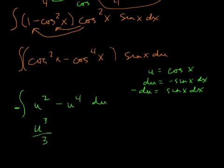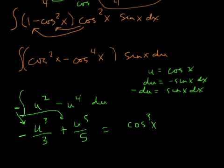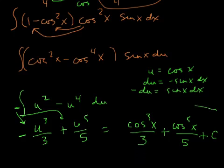You get u cubed over three, u to the fifth over five, and then I have to multiply both of those times negative. So that gives me negative there, but it will turn this into a positive. And so now put your cosines back in. Cosine cubed x over three, plus cosine to the fifth x over five, plus c.